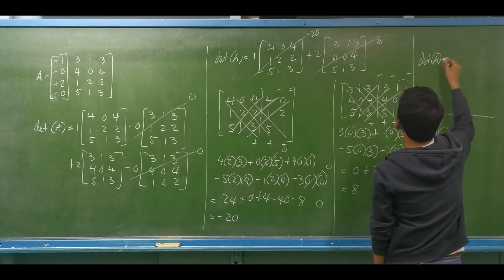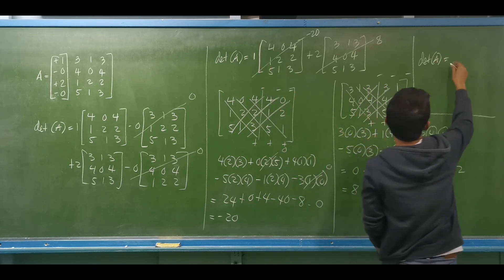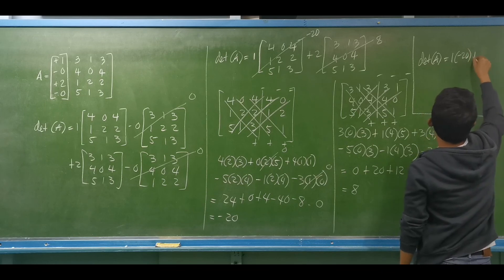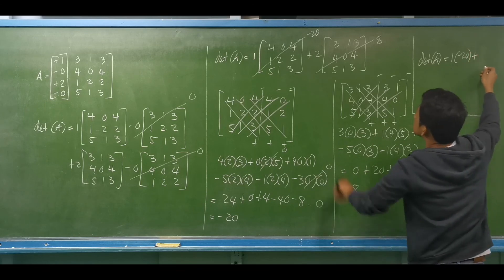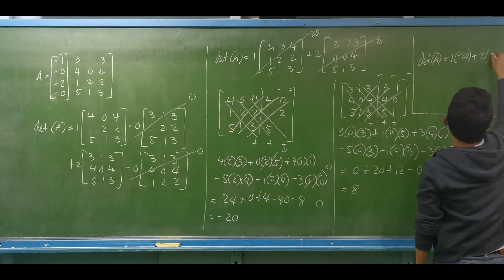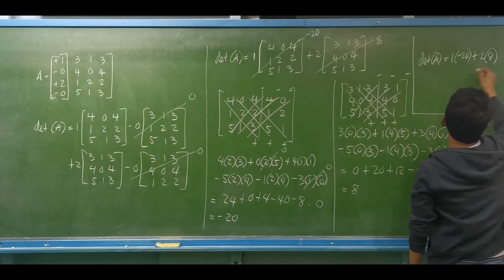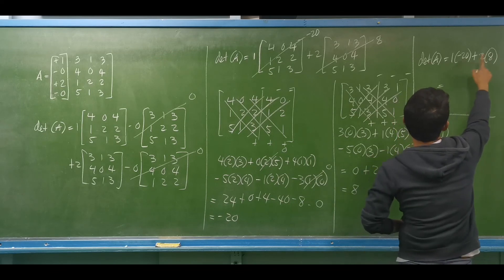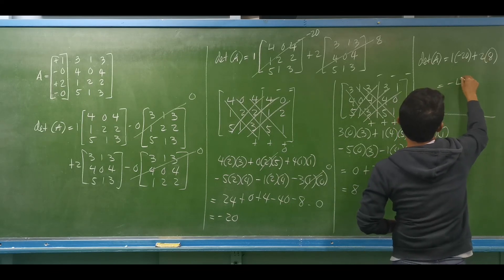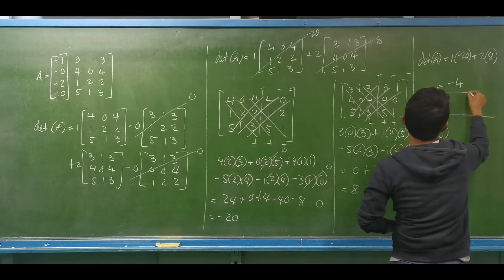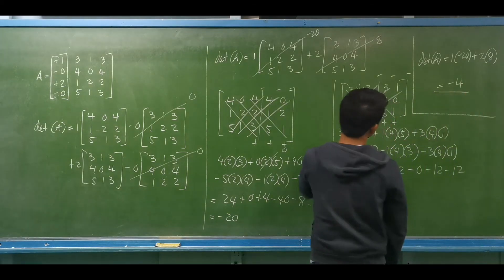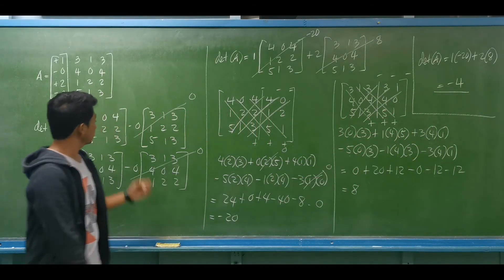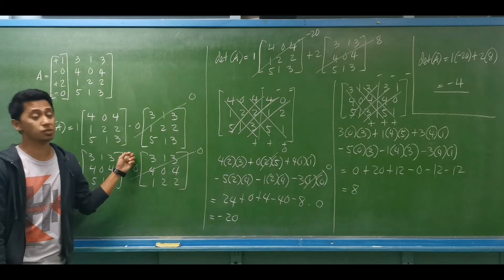So the determinant of matrix A is 1 multiplied by negative 20, plus 2 multiplied by positive 8. This equals negative 20 plus 16, which is negative 4. That is our final answer, combining the Laplace expansion and the basket-weave method.